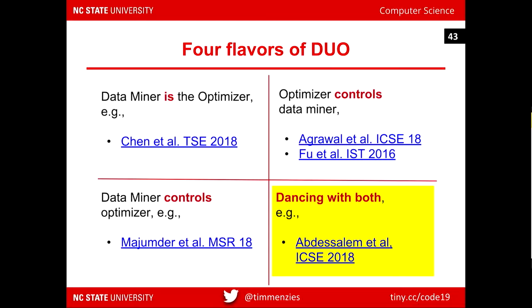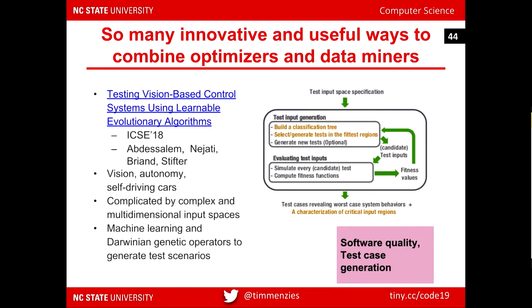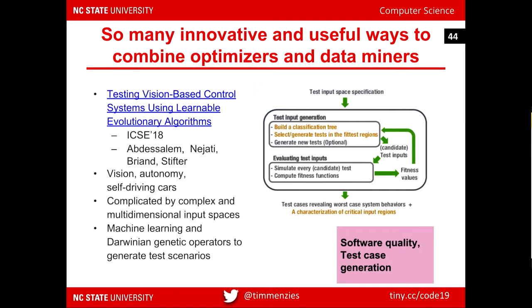One of the most interesting recent examples was a paper at ICSE from a Luxembourg team working on vision, autonomy, and self-driving cars. They had an elaborate system where the machine learner produced a decision tree on good ways to park the car, then using constraints in the decision tree they did mutation within one branch, driving a genetic algorithm that found good ways to produce new constraints to drive the decision tree a second time around — going round and round between the two systems. Even for autonomous systems, they found dramatic improvement in speed and reliability.